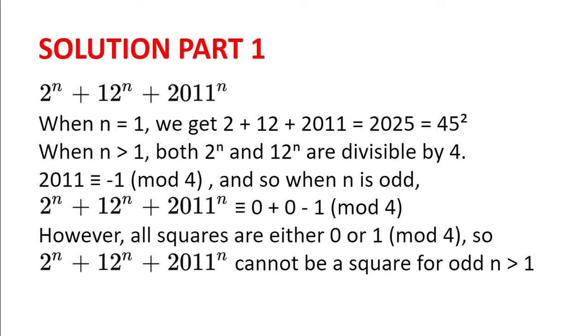When n is greater than 1, both 2 to the power of n and 12 to the power of n are divisible by 4. Now 2011 is minus 1 modulo 4. So 2011 to the power of n is minus 1 to the power of n modulo 4. And so when n is odd, that will be minus 1 modulo 4.